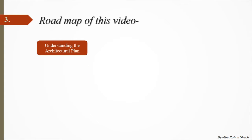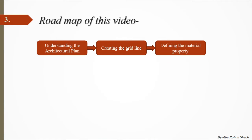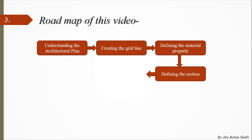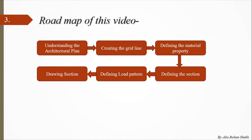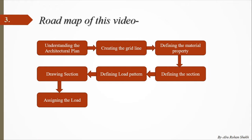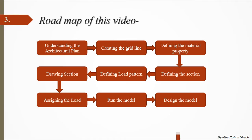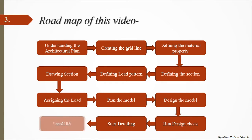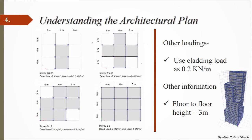The road map of this video is as follows: first we understand the architectural plan, then create grid lines, define material properties, define sections for beams, columns and slabs, define three load patterns — dead load, live load and seismic load — draw the sections, assign loads on RCC elements and slabs, run model analysis, design the model, and run design checks as per IS 456-2000, then start detailing.